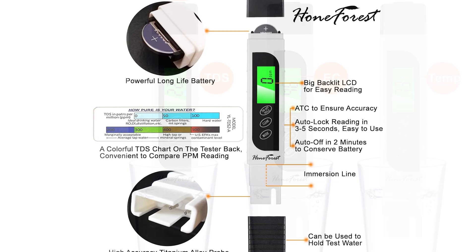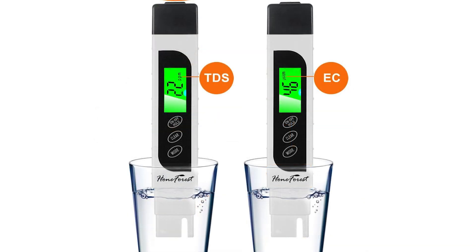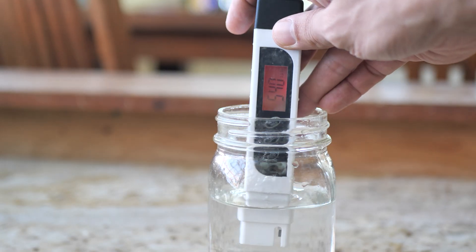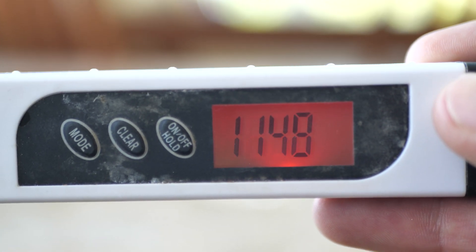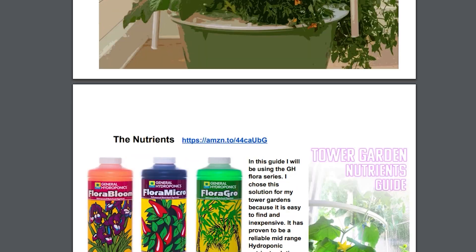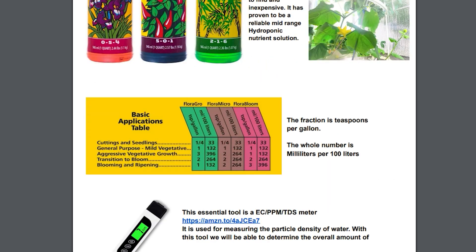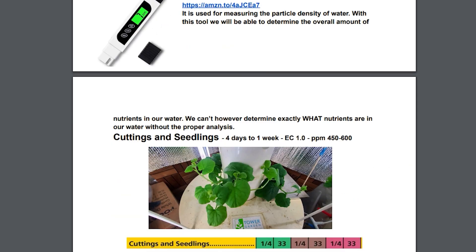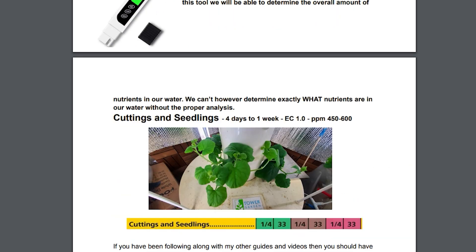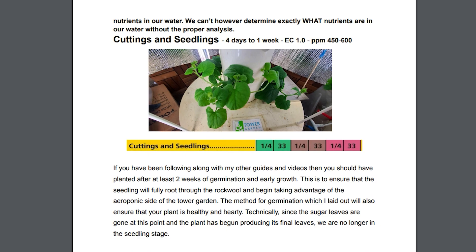So this is an EC or TDS meter. I'm going to explain what both of those mean and then go over how to actually use one of these to get your measurement, how to read your measurement, and then how to check your measurement against resources to determine whether or not you need to raise or lower your nutrients.